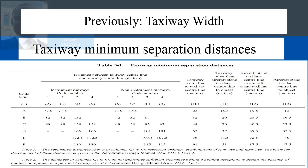As previously mentioned, Annex 14 has outlined the minimum separation distances required for all situations. However, when applying these standards, one must know the code letter of the critical aircraft — that is code A, B, C, D, or E. Also, the code number of runways is required for runway separation distances.